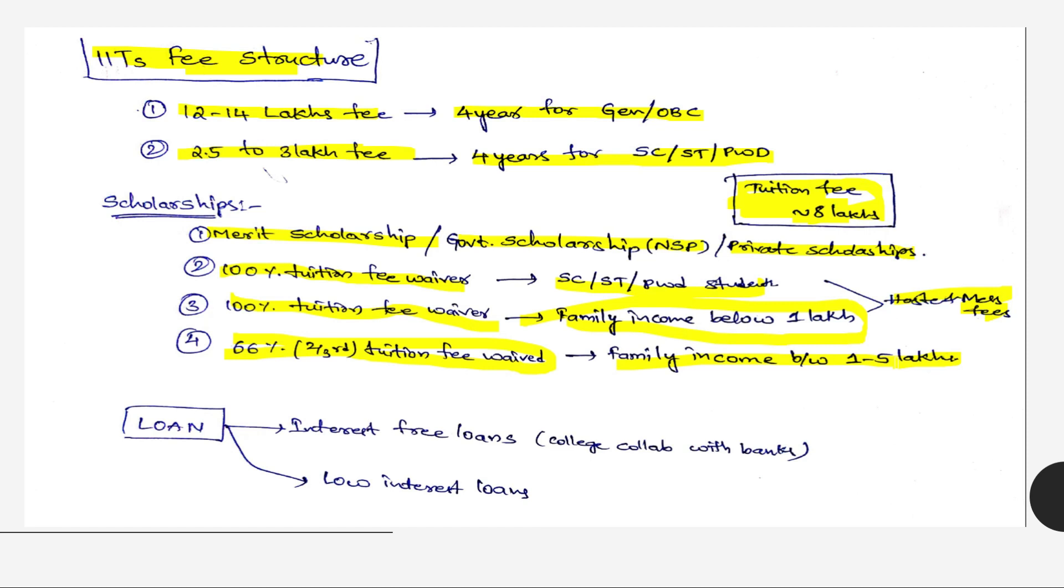Coming to loans, you can get easily in IITs. In some colleges they provide interest-free loans, means your interest will be paid by government and college collaborates with some branches to provide interest-free loans. If you take loan of 12 lakhs, after graduation you only need to pay 12 lakhs with no interest. You can also avail some low interest loans.